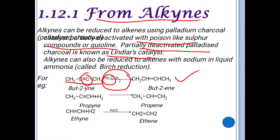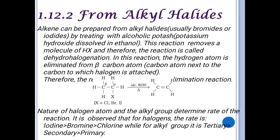Another method of preparing alkenes is from alkynes treated with sodium in liquid ammonia, called Birch reduction. These are the methods from alkynes. The next method is from alkyl halides.